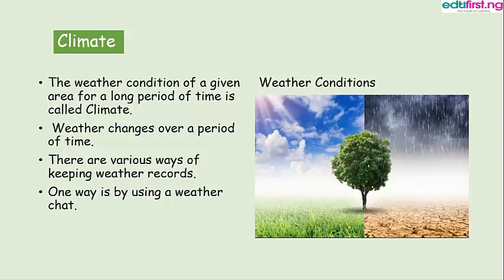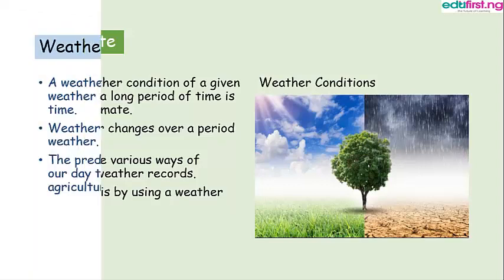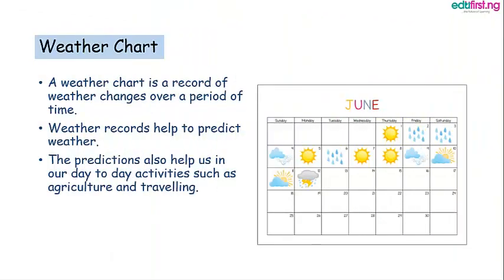There are various ways of keeping weather records. One way is by using a weather chart. A weather chart is a record of weather changes over a period of time. Weather records help to predict weather, and the predictions also help us in our day-to-day activities such as agriculture and traveling. For instance, in the chart here, the weather chart is for the month of June.